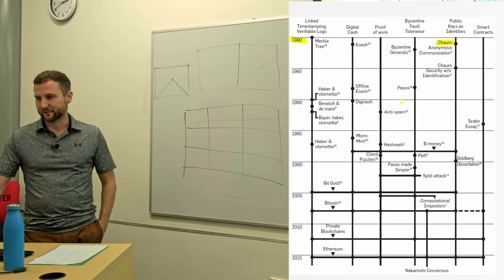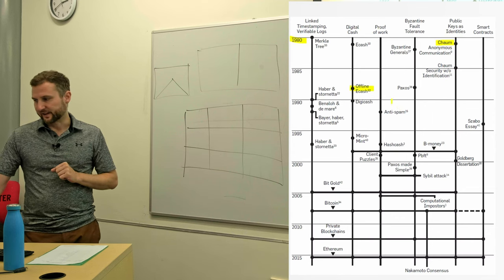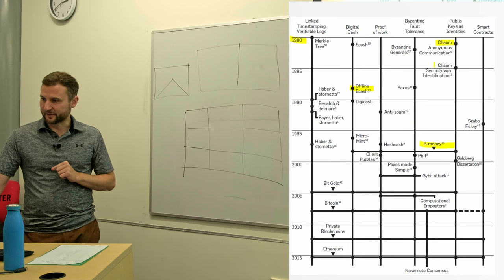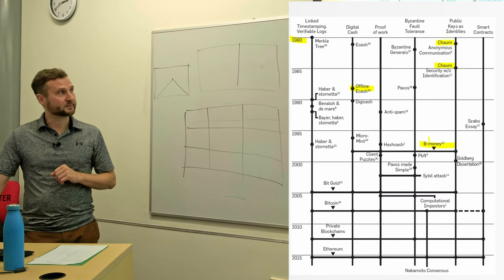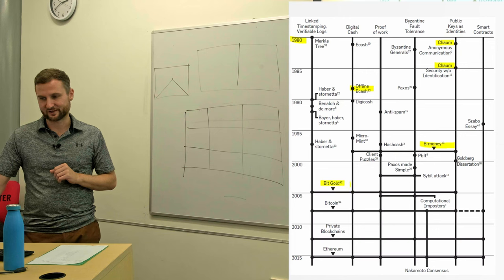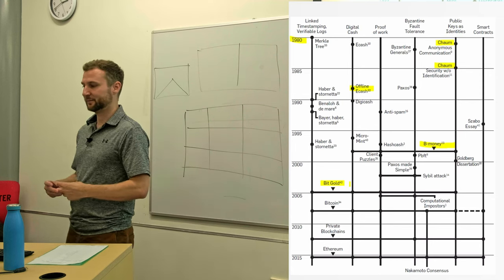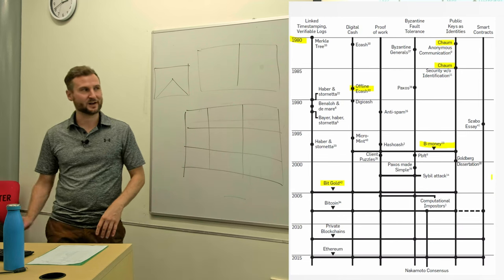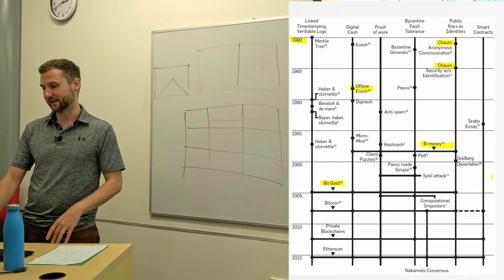So some attempts that we've seen before are DigiCash in 1989. So we have offline eCash, we have Bmoney in 98. David Chaum here, he kind of made a real thing, but it wasn't necessarily decentralized. Bmoney is more of a thought experiment or an essay. It wasn't actually built. And then another one that comes up a lot is Bitgold, which sort of starts to sound now like Bitcoin, meaning that gold is a good store of value, well known throughout history. This guy Nick Szabo is sometimes thought to perhaps be or have some close ties to the pseudonymous creator of Bitcoin, Satoshi Nakamoto.